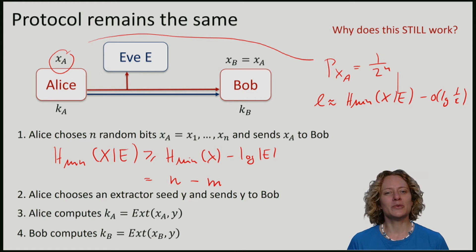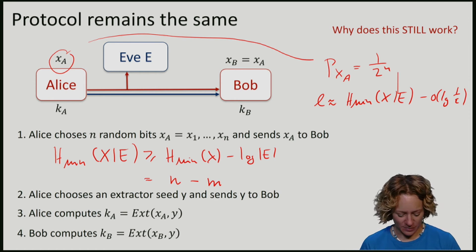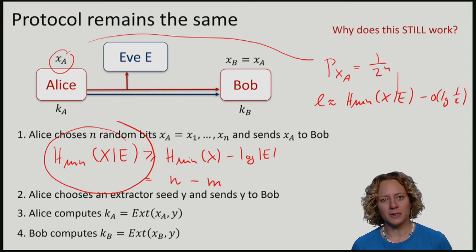We will see later that the idea behind quantum key distribution protocols is very similar. Only there, we will not have to rely on some strange guarantee that gives us a bound on Eve's min entropy. Instead, we will be able to measure the min entropy using the properties of quantum mechanics.